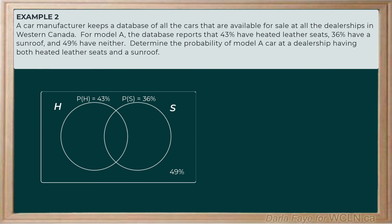We can use the fact that 49% have neither a sunroof nor heated leather seats to figure out how many cars do have at least one. This is similar to our first example — we take 100% of the cars and subtract the 49% that have neither, showing that 51% of the cars have at least a sunroof or heated leather seats. So the probability of event H or S is 51%.